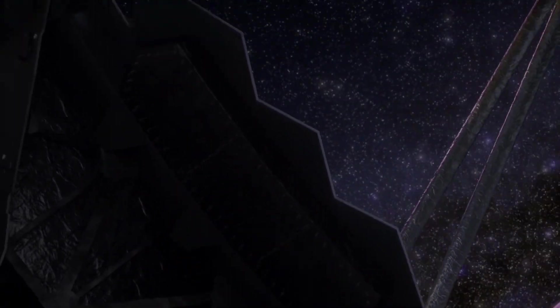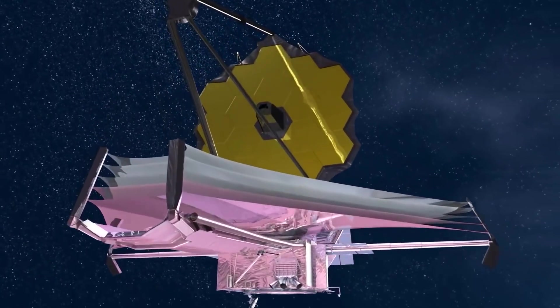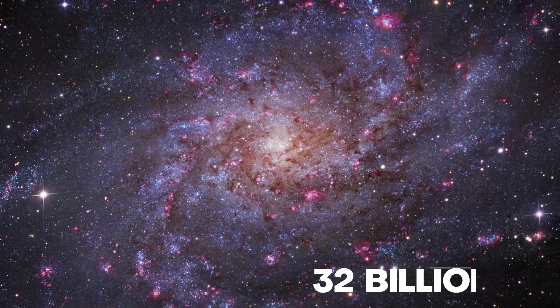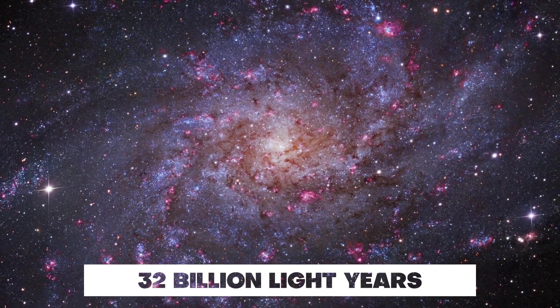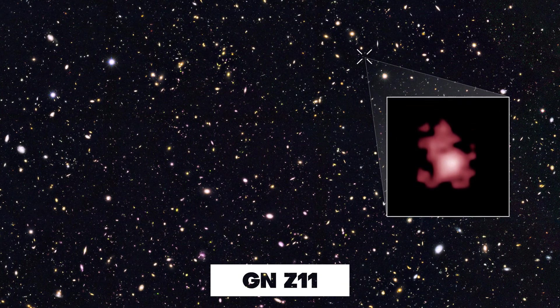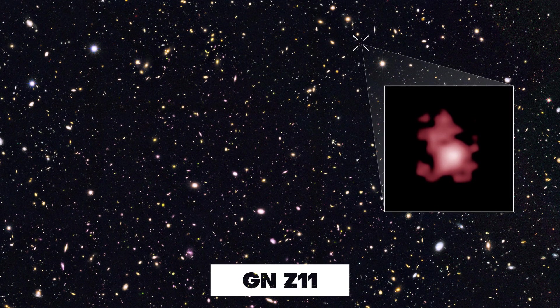We can actually use the James Webb Space Telescope to discover events which were not possible before. A galaxy which is located about 32 billion light years away, called GNZ11, was able to be discovered with the James Webb Space Telescope. Isn't that unbelievable?